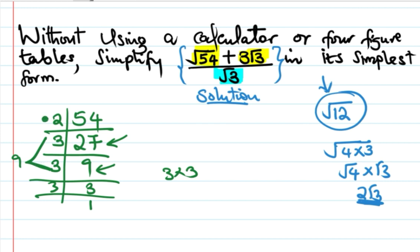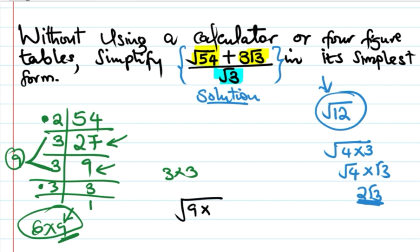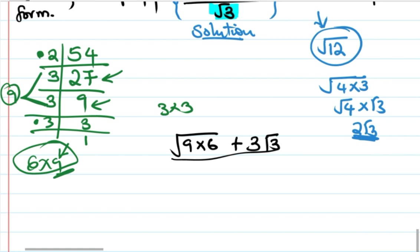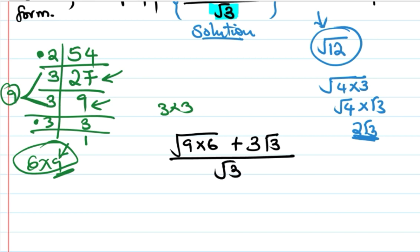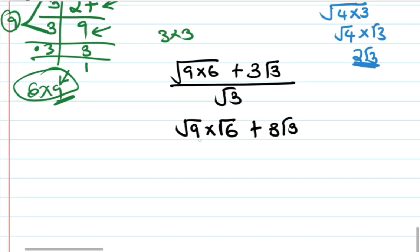So 54 can be written as 2 times 3 times 9, which is 6 times 9. And we can divide that one as root 9 times root 6, then plus 3 root 3, here divided by root 3.